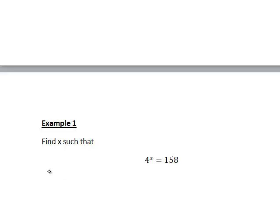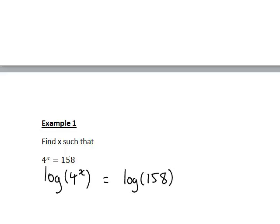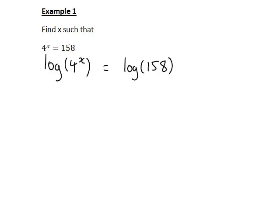The first step is to take logs of both sides. So log of 4 to the x is log of 158. Then we can use our log law that says log of 4 to the x is the same as x multiplied by log 4, and that is equal to log 158.